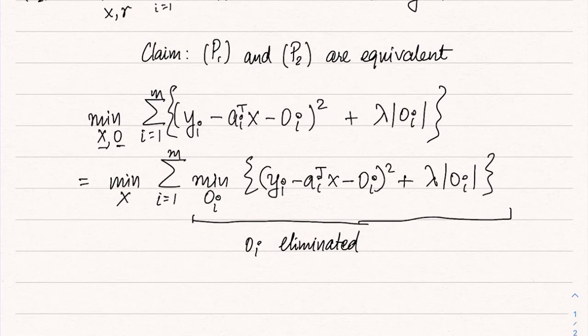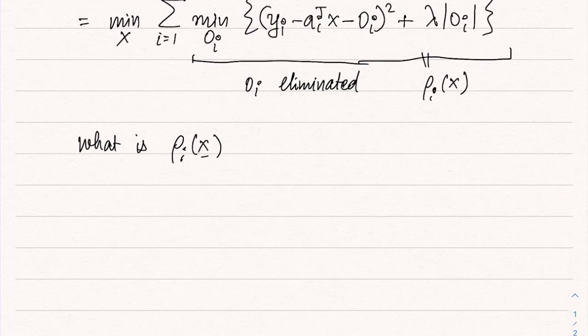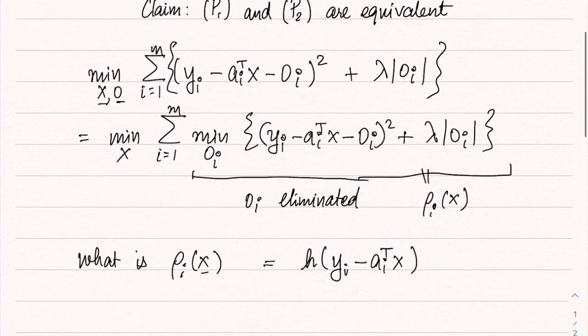Now we consider this function as a function of y_i minus a_i transpose X. O_i has been eliminated, so this is only a function of X. So we can call it as rho_i of X. In particular, we are interested in seeing how rho_i of X depends on X. Note that in rho_i of X, X appears only in the form of a_i transpose X. In fact, y_i minus a_i transpose X is the only dependence. So rho_i of X is essentially some function of y_i minus a_i transpose X. And this function itself, H itself, does not depend on i because the i dependence is only through y and a. So let us try to find out the form of this function H. And in fact, we will prove that H is exactly the Huber function.